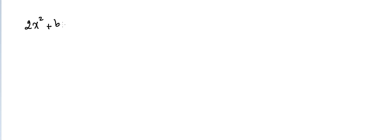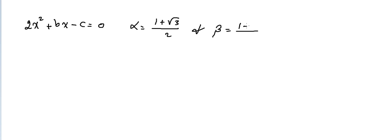Let's take another example: find the values of B and C if the quadratic equation 2x squared plus Bx minus C equals 0 has roots alpha equals (1 + √3)/2 and beta equals (1 − √3)/2.